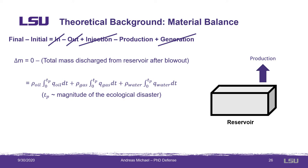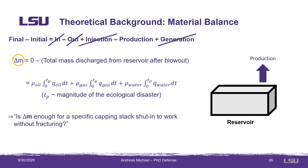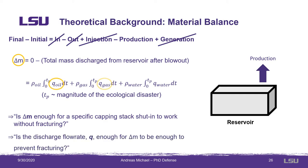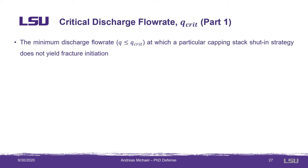Our question boils down to: is the mass removed from the reservoir, delta m, enough for a capping stock shut-in strategy to work, preventing fracture initiation? And more specifically, is the discharge flow rate enough for delta m to be high enough so that the capping stock shut-in strategy will work? To answer those questions, we developed a parameter called the critical discharge flow rate, or Q-Crit.